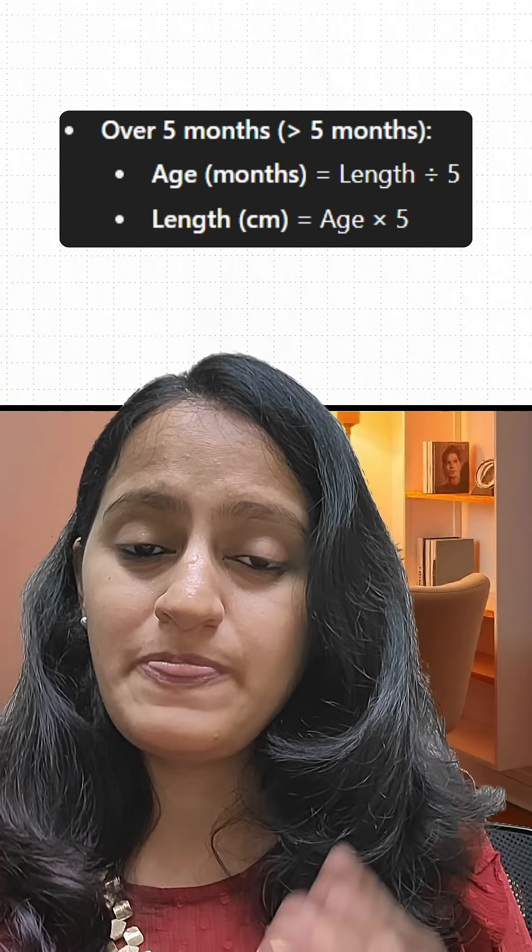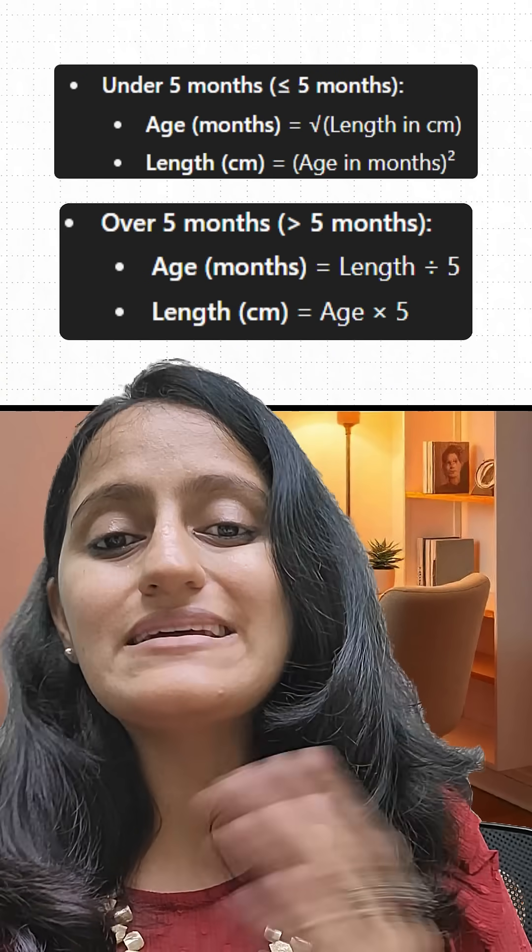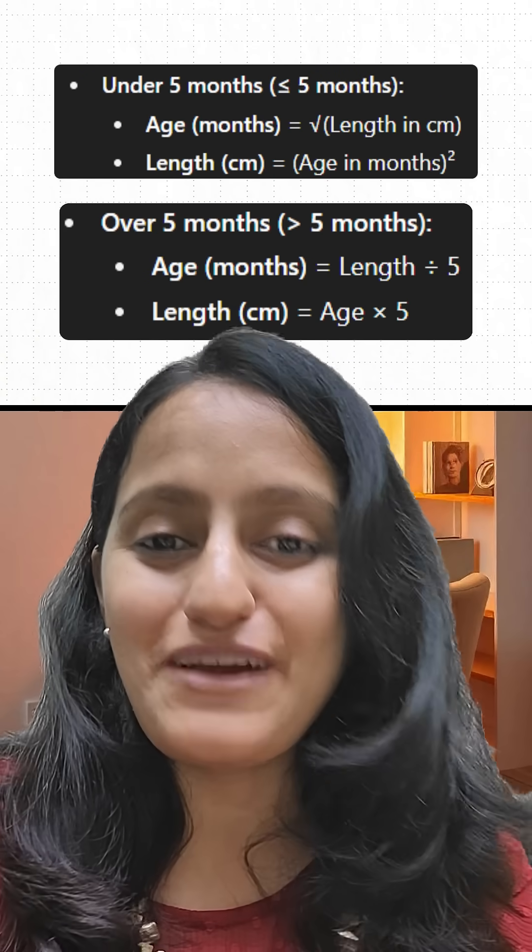Conversely, from the length to calculate the age: use the square root for under five months, and division by five for over five months. That was a quick trick for Haase's Rule. I hope you found it useful — if so, please like this video, follow us, and share it with your friends. Thank you so much.